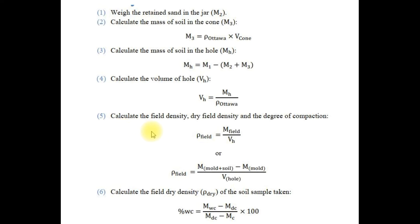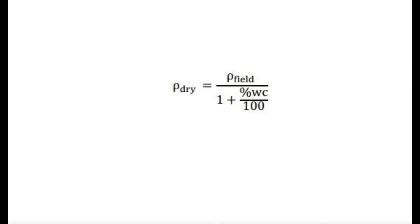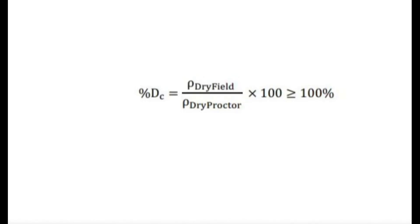With the volume of the hole, the field density is calculated as the mass of soil obtained from the pit divided by the volume of the hole. After obtaining the field density, the dry density can also be obtained if a sample was tested for moisture content. From there, the degree of compaction can be calculated based on the maximum dry density (MDD) data available.